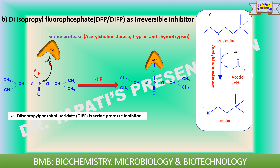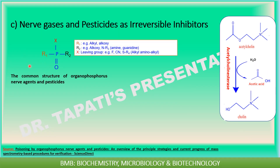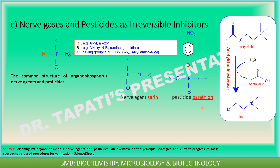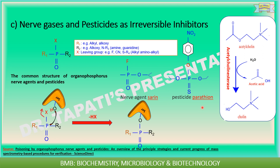Acute exposure to diisopropyl fluorophosphate causes irreversible inhibition of acetylcholinesterase activity, leading to various neurological dysfunctions. The peptidases trypsin and chymotrypsin contain serine groups at the active site and are also inhibited by diisopropyl fluorophosphate. Organophosphorus nerve agents and pesticides are acetylcholinesterase inhibitors that cause phosphorylation of the enzyme via a leaving group X. One example of a nerve agent is sarin and one example of a pesticide is parathion. These compounds combine with serine residues in acetylcholinesterase, inhibiting enzyme activity and potentially inducing a cholinergic crisis in vivo, which may lead to death.